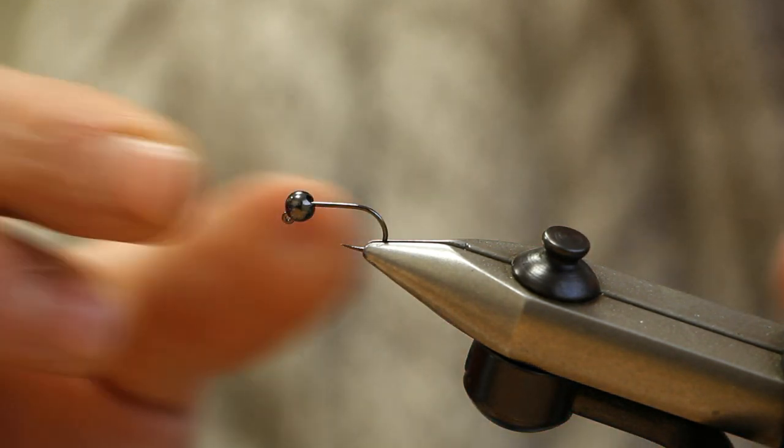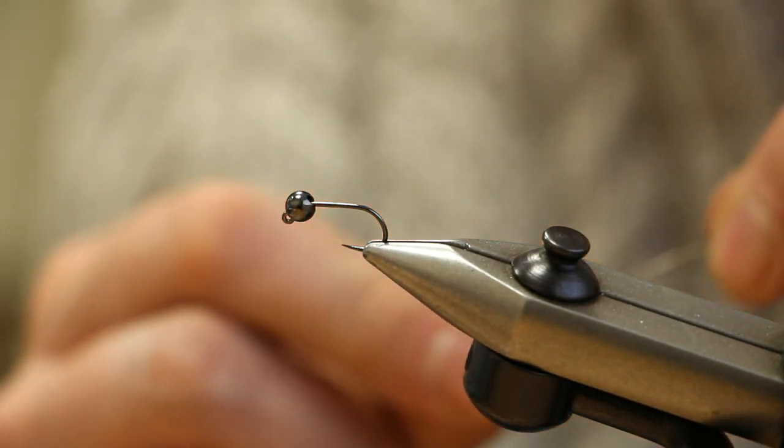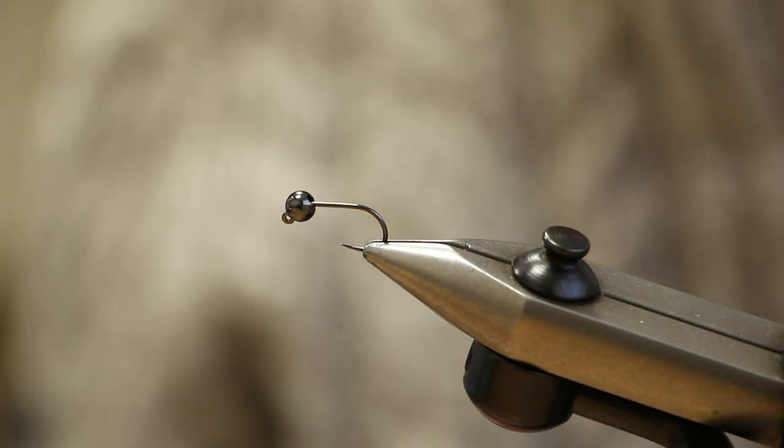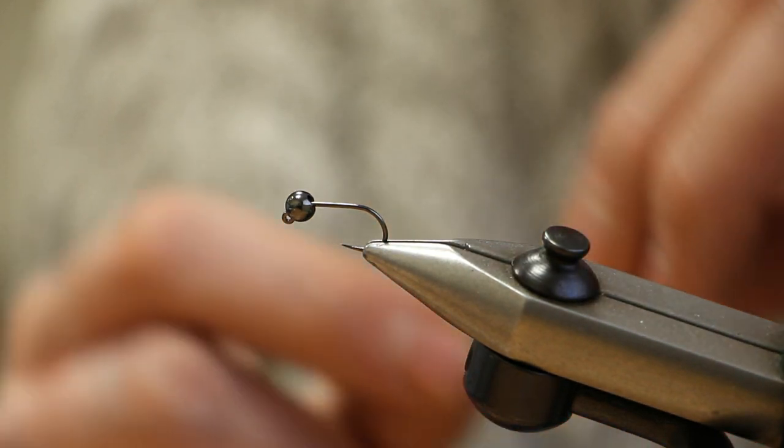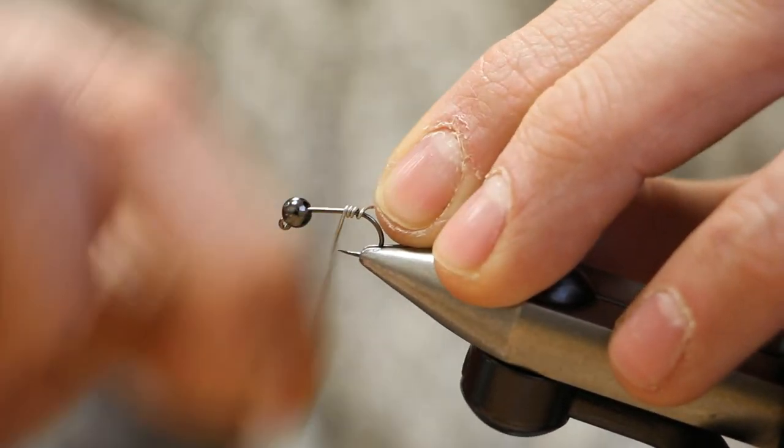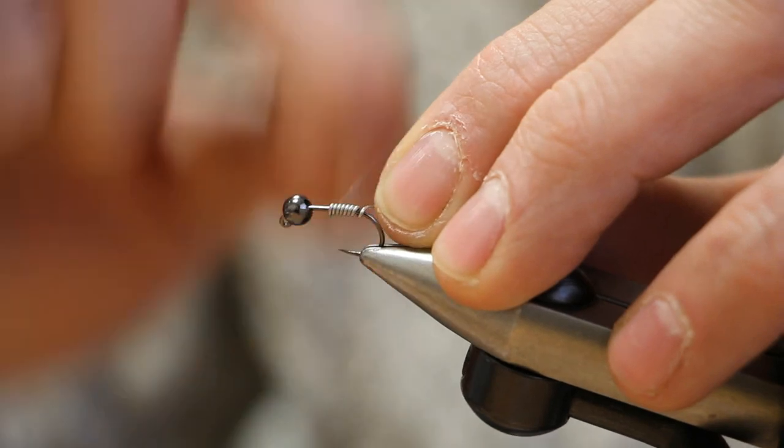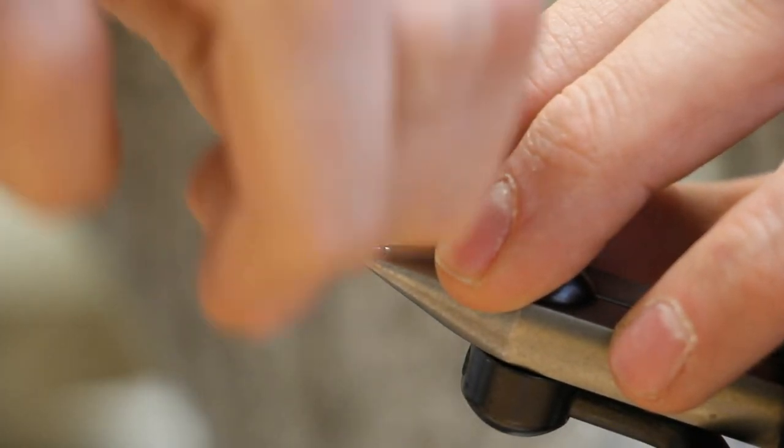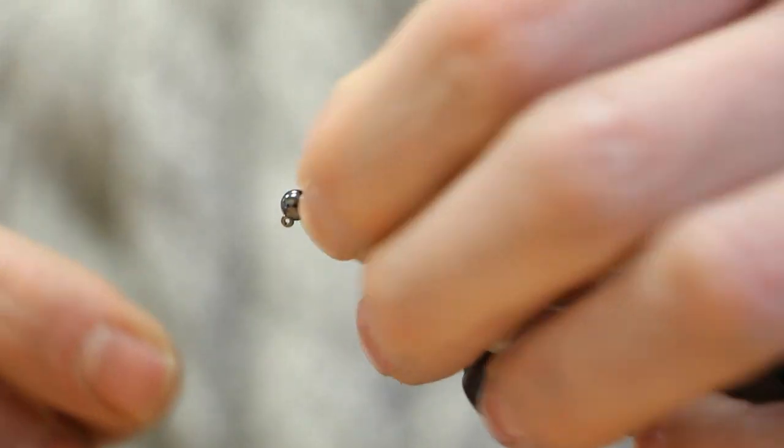So the trick to tying this fly I think is to give it a lead underbody. It makes it much easier to wind the squirmy body, so let's wind this on first. That's about 10 turns roughly.